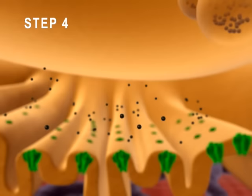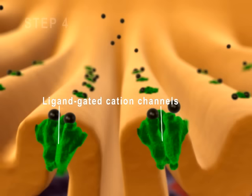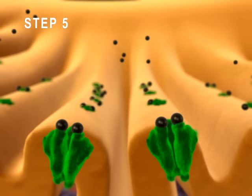Step 4: Acetylcholine diffuses across the synaptic cleft and binds to acetylcholine receptors which contain ligand-gated cation channels. Step 5: These ligand-gated cation channels open.